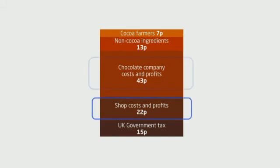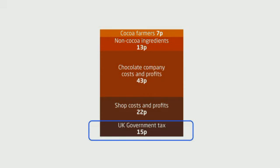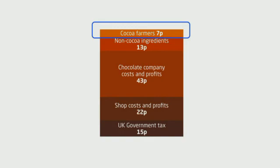More than a fifth is for the shop, with 15 pence in tax for the UK government. And look at this number. The cocoa farmer earns only seven pence out of every pound.